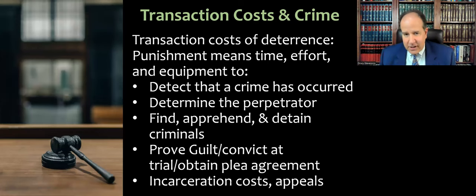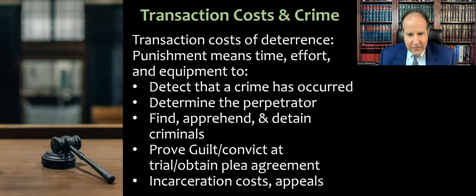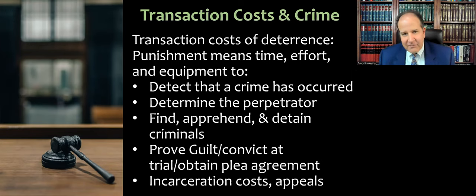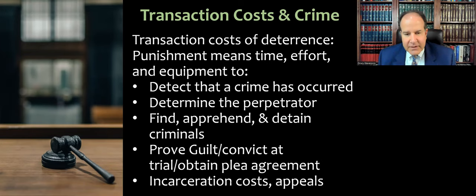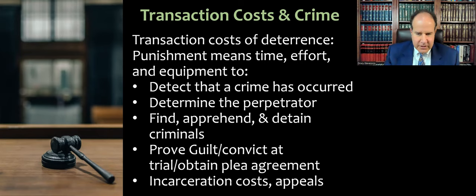On the other hand, there are transaction costs for the criminal justice system itself. Passing laws and punishing people requires time, effort, and equipment. Police, detectives, and the FBI all detect crimes, figure out who the perpetrator was, hunt that person down, apprehend, and detain criminals. Prosecutors and DAs and U.S. attorneys who prove guilt at trial or get a plea agreement during plea negotiations — all of that costs money. Those people get salaries, pensions, benefits, and maybe a squad car. There's a lot of overhead involved in prosecuting and deterring crimes, even at the stage of finding criminals. And of course, our prison system is expensive — incarceration costs, costs of appeals, and so forth.